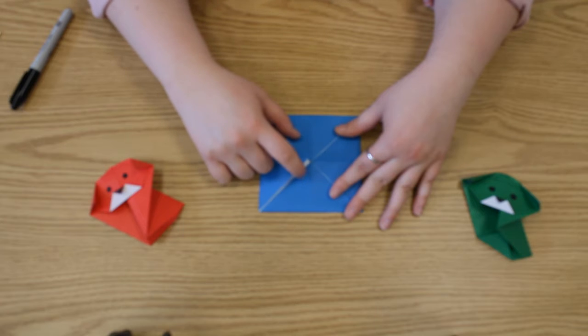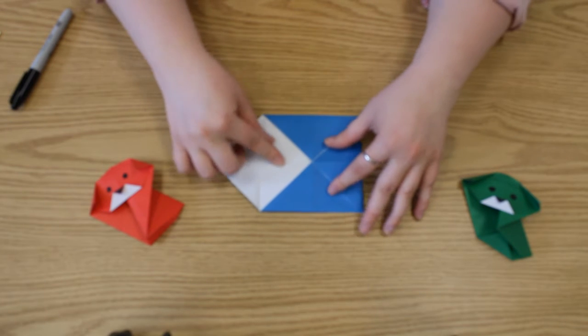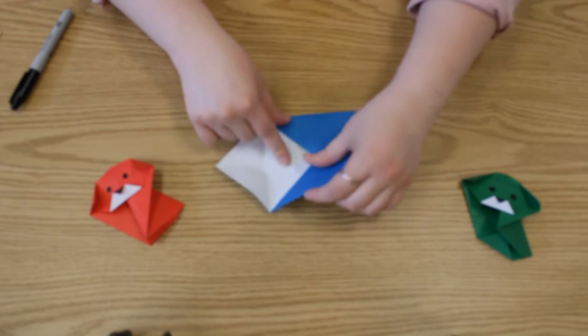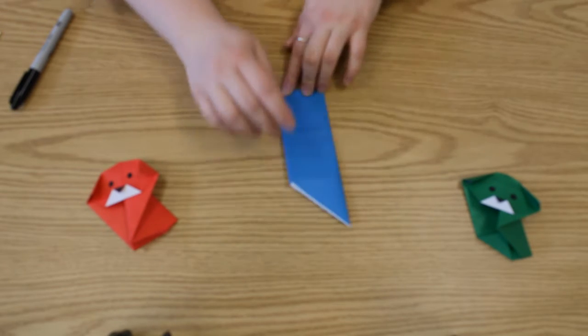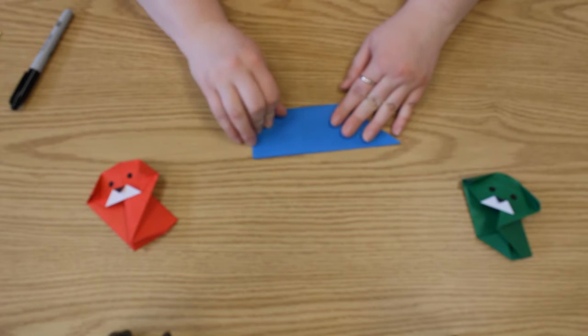So now we're going to take one of the flaps and open it and fold it down. So you've got this fun little wedge shape. I'm going to turn it so it's like this.